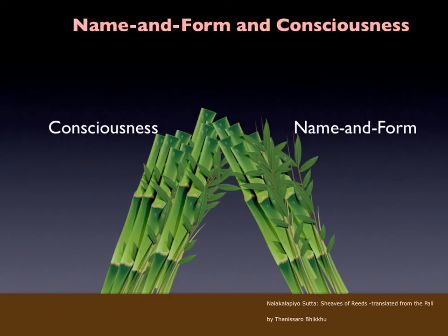There is a close relationship between name and form and consciousness — they are interdependent. The Buddha said it is like two stacks of bamboo kept against each other: if you pull one stack, the other will fall. This was explained in the Nala Kalapiya Sutra.